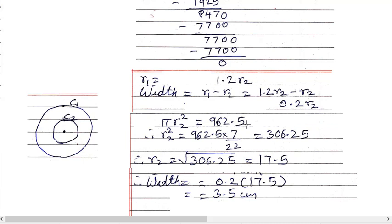Here I have shown you the division: 2772 upon 1925. So you are going to do it. What we get is R1 equals 1.2 R2.